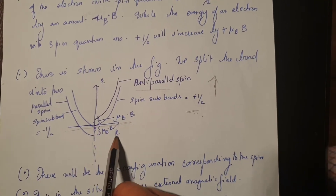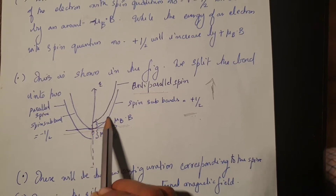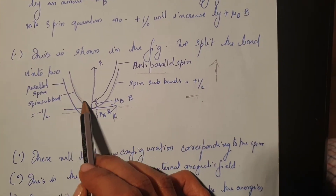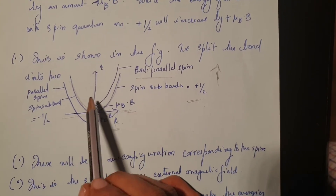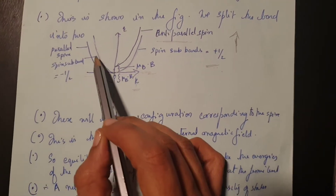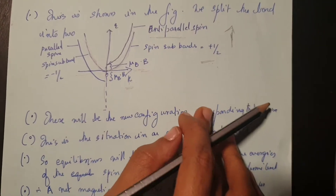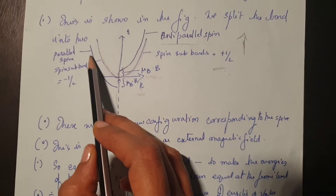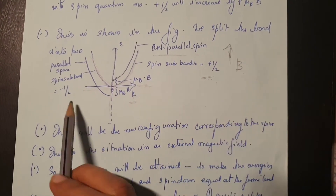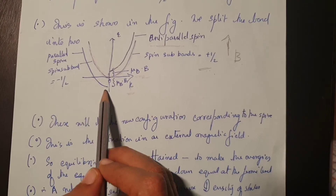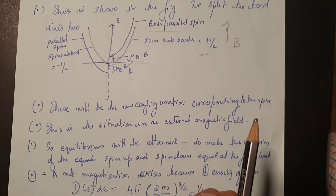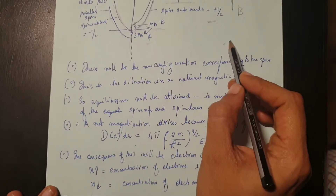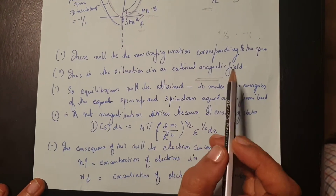If you draw a graph with the k-vector on one axis and energy on the other, before applying the magnetic field the energy curve looks symmetric. Once the magnetic field is applied, there is an upward shift for electrons with anti-parallel spin (plus one-half) — their energy increases by mu_B times B — and a downward shift for electrons with parallel spin (minus one-half) — their energy is reduced by mu_B times B.